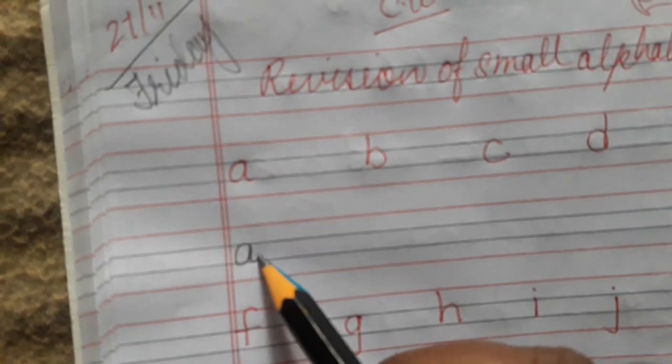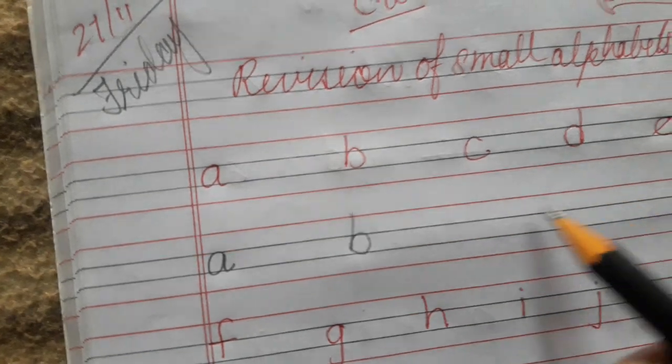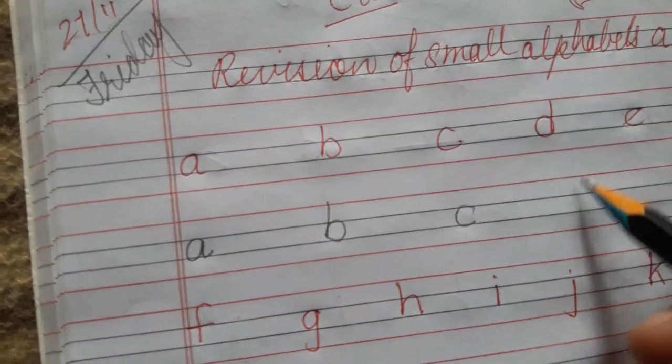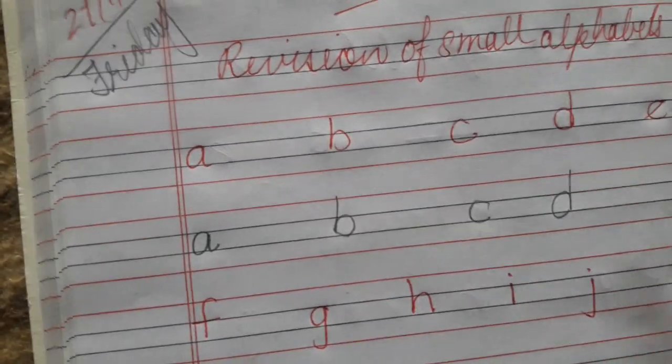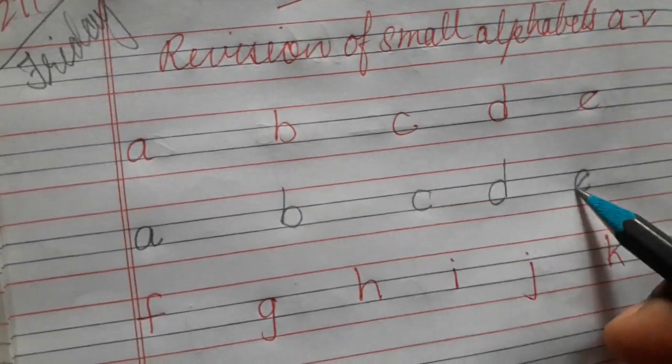A for apple, B for ball, C for cat, D for dog, E for elephant.